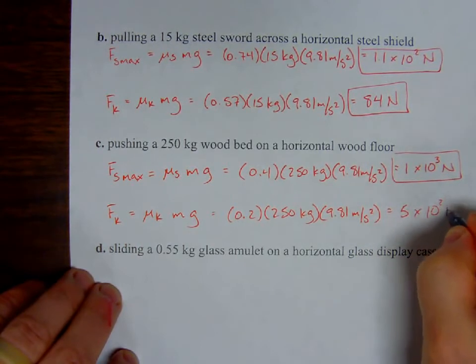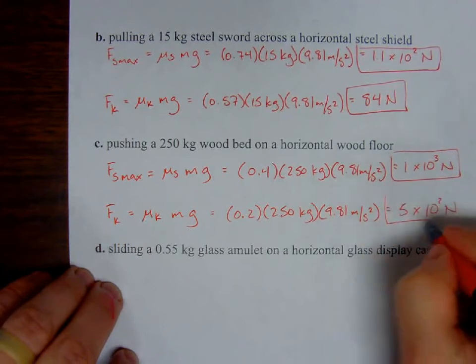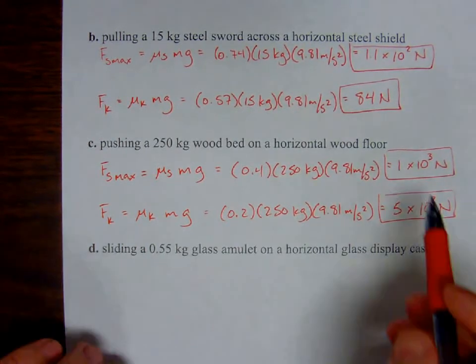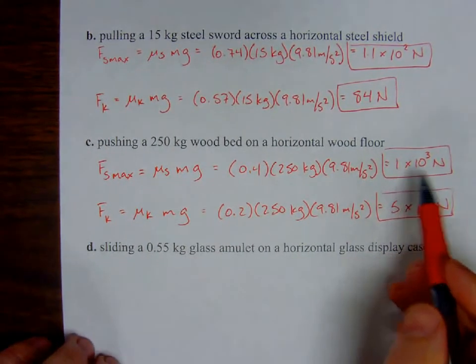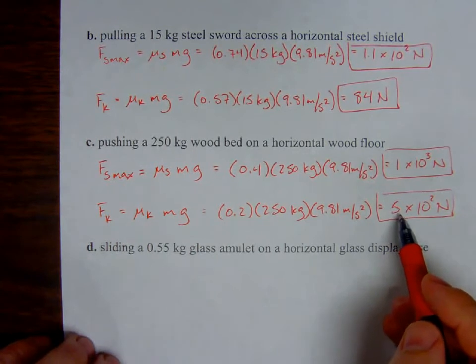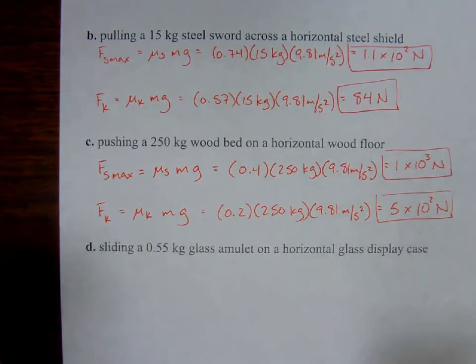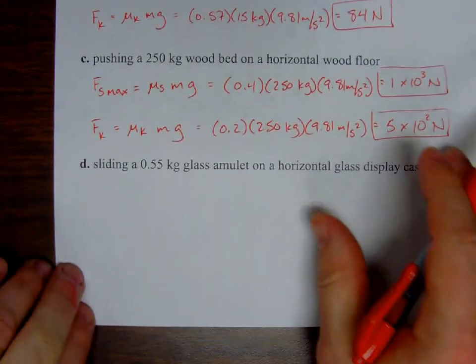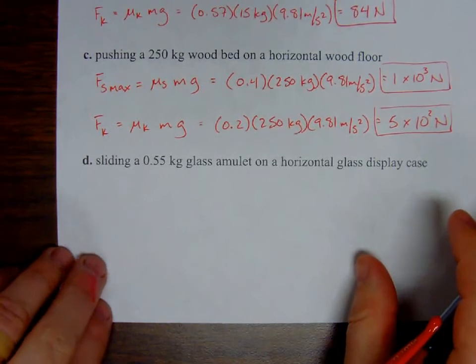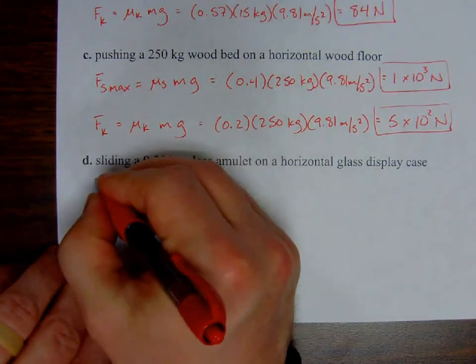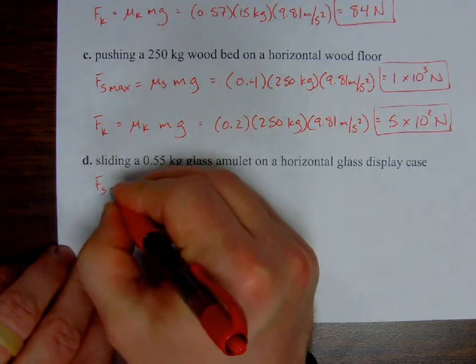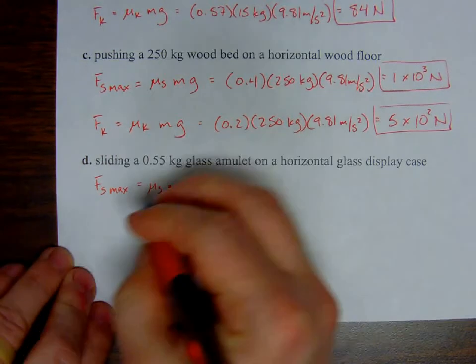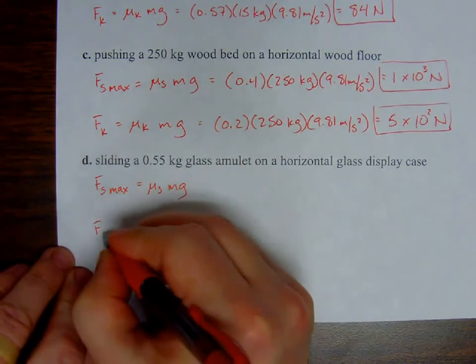Again, doing these rapid fire can really help you, get used to the process. Alright, okay, so what am I doing here, glass display case, alright, so 0.9, and 0.55 kilograms, acceleration due to gravity, but in the opposite direction, so it's positive, and again, one significant figure, so I'm going to go with five newtons.